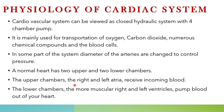A normal heart has two upper and two lower chambers. The upper chambers — right and left atria — receive incoming blood. The lower two chambers are the left ventricle and right ventricle. The ventricles pump blood out, while the atria receive blood in.